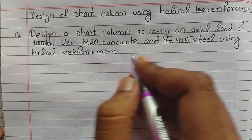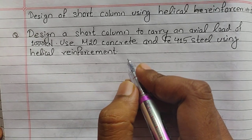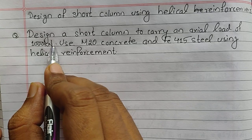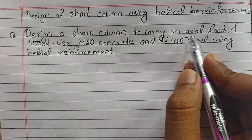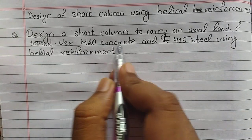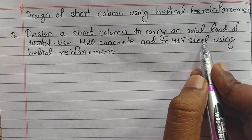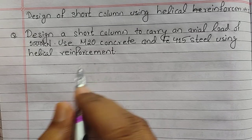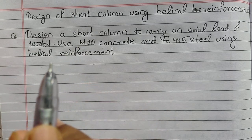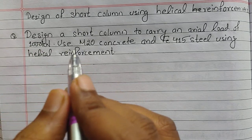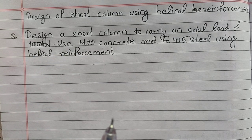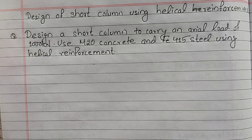Hello everyone, welcome to my YouTube channel Civil Learning Online. Today in this video I will be discussing the design of a short column using helical reinforcement. I have selected a numerical in which we have to design a short column to carry an axial load of 1000 kN using M20 concrete and Fe415 steel, providing helical reinforcement. We need to find AST and then find the pitch of the helix.